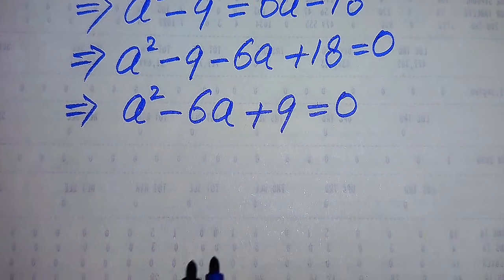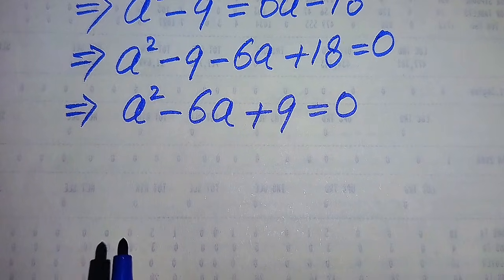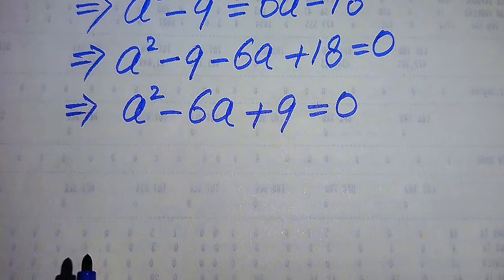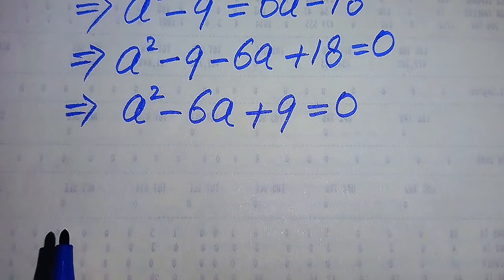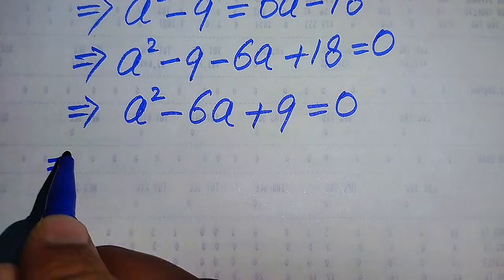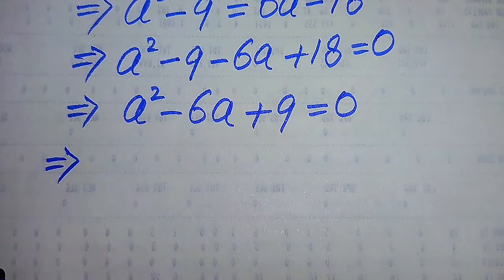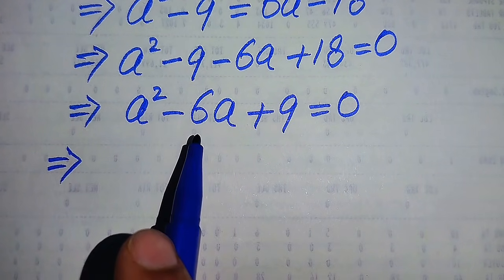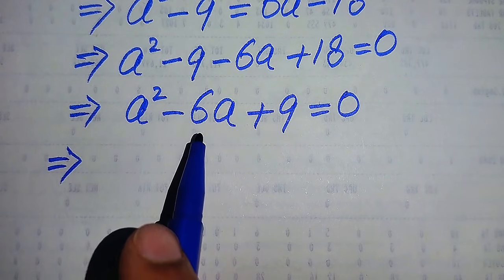There are three methods to solve the quadratic equation: the first is the factorization method, the second is the completing the square method, and the third is by applying the quadratic formula. Here we make the factors of this equation by breaking its middle term.